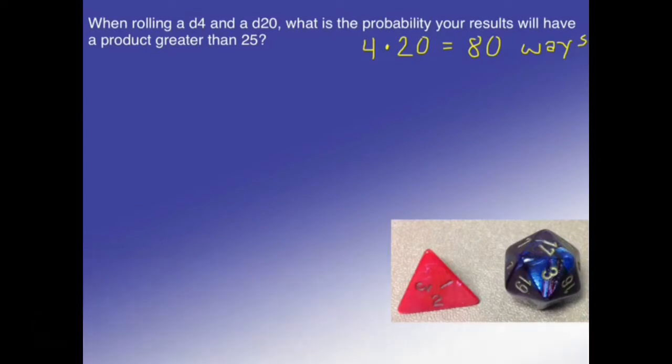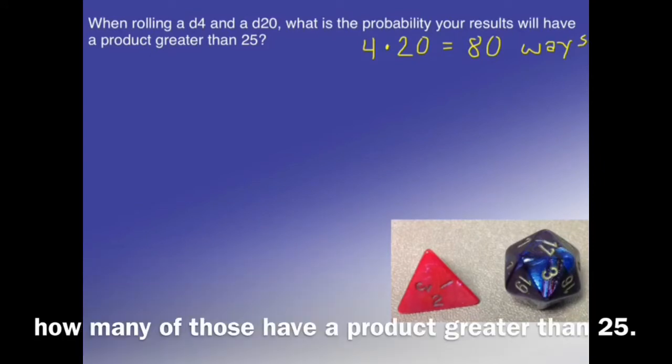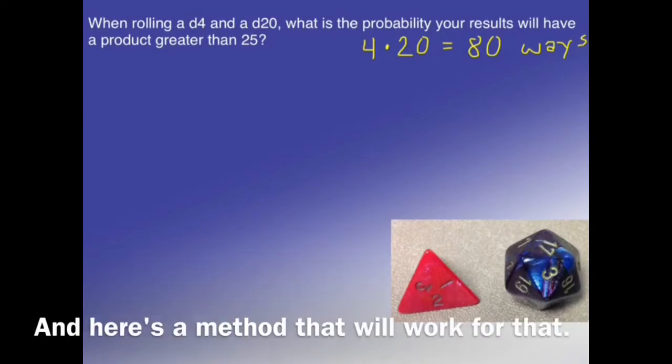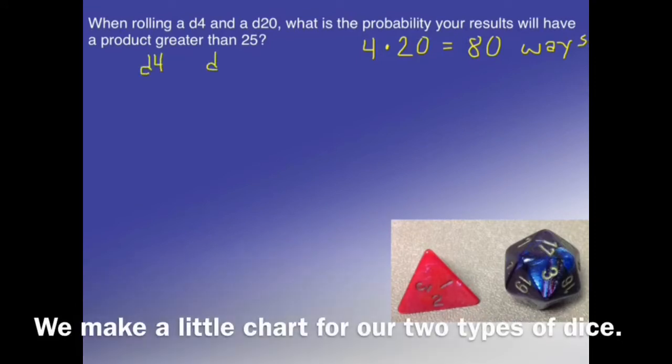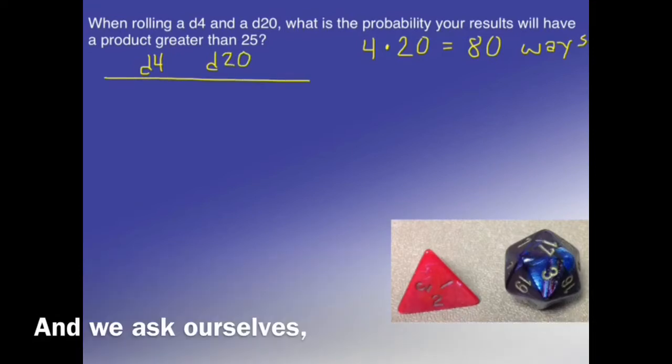Next, we need to figure out how many of those have a product greater than 25. And here's a method that will work for that. If we make a little chart for two types of dice, we can ask ourselves: